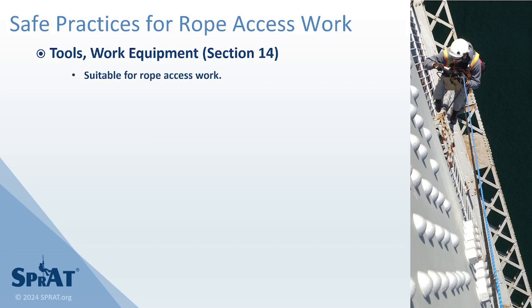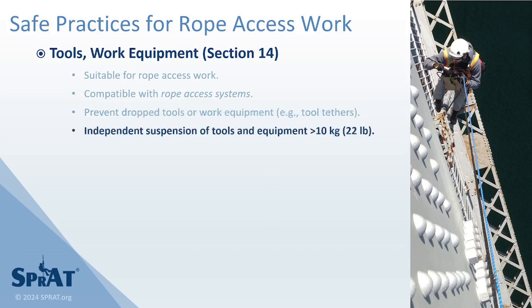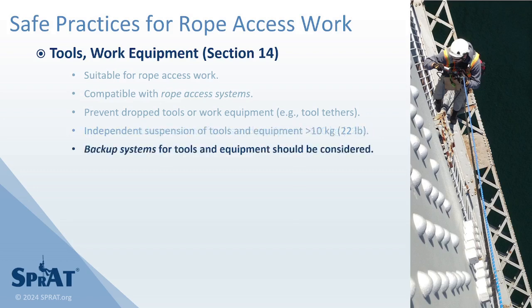Tools and work equipment must be suitable for the rope access work and compatible with the rope access systems. Tools and work equipment attached to work team members or rope systems must not impair the function of the main or backup systems. Appropriate steps must be taken to prevent tools and work equipment from being dropped or falling. Tools and equipment more than 10 kilograms (22 pounds) in mass should be suspended with a separate rope system secured to an independent anchorage system. A backup system should be considered when significant risk of harm to personnel or property from a component failure of a rope system suspending or transporting tools, work equipment, or materials exists.